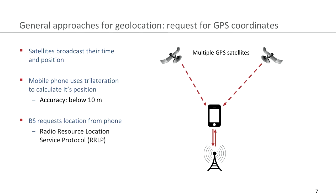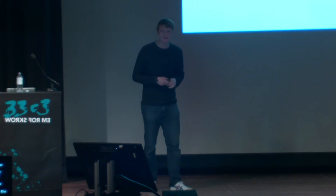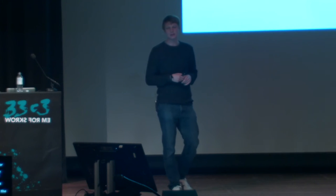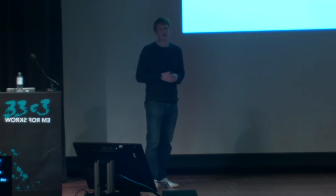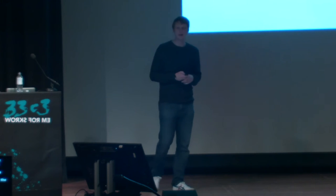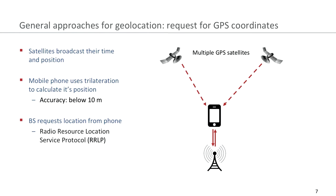Most of you will know about GPS. GPS satellites broadcast their time and their position, and the mobile phone uses these to calculate its position. The accuracy is usually below 10 meters, but it depends on the chipset within the mobile phone. The base station can request the position of the phone by issuing a request with the radio resource location service protocol.